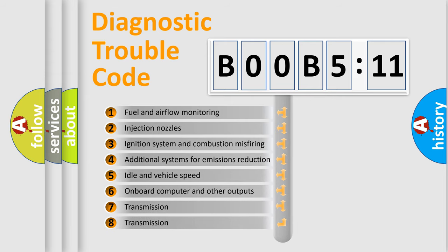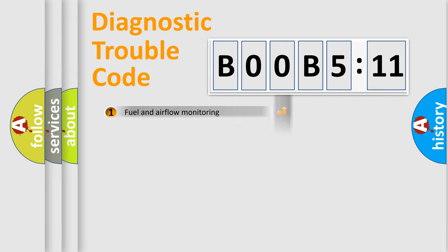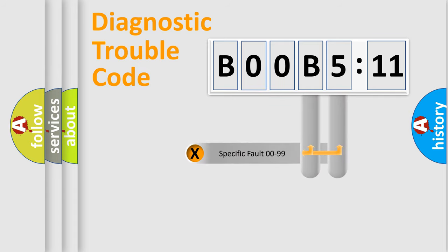The third character specifies a subset of errors. The distribution shown is valid only for the standardized DTC code. Only the last two characters define the specific fault of the group.